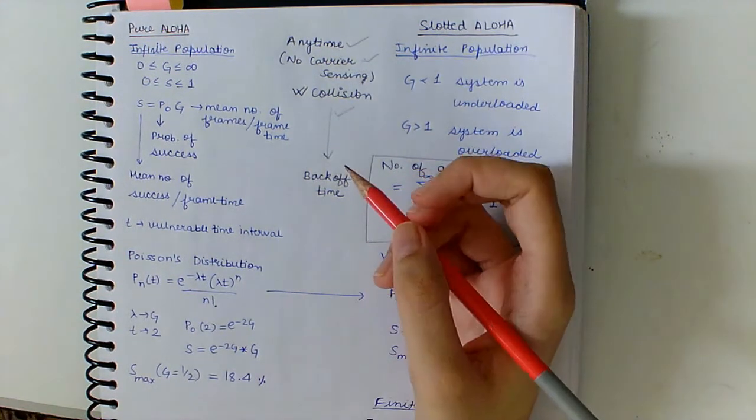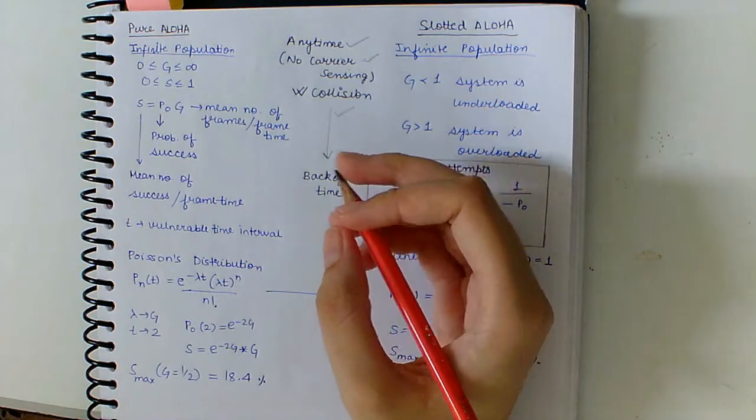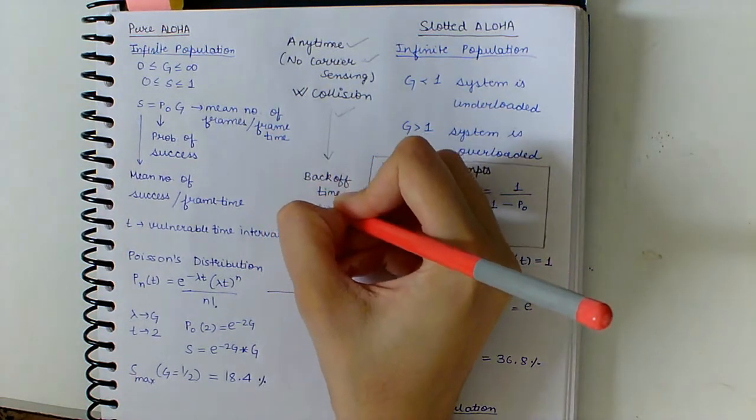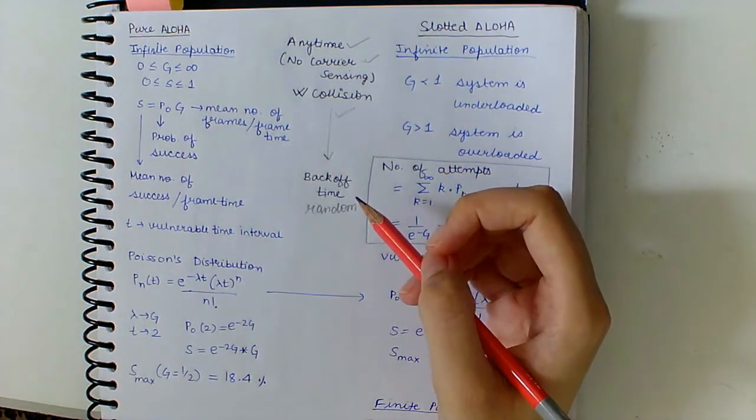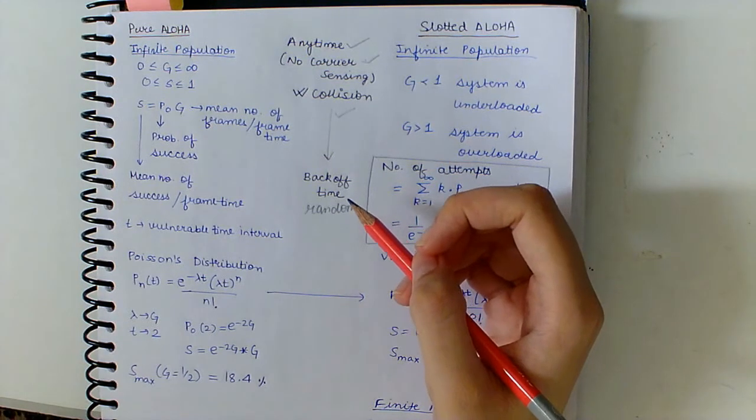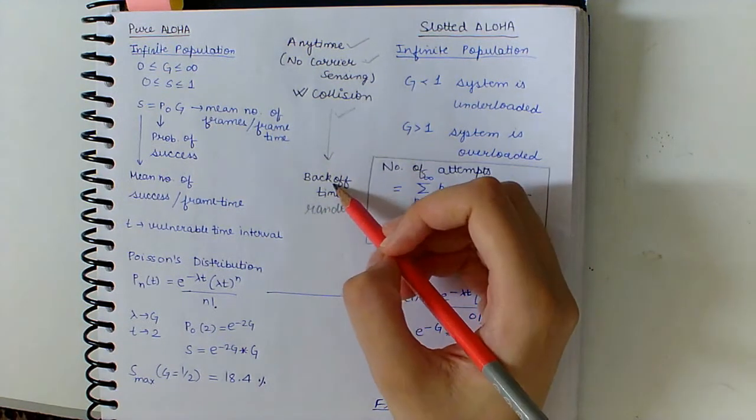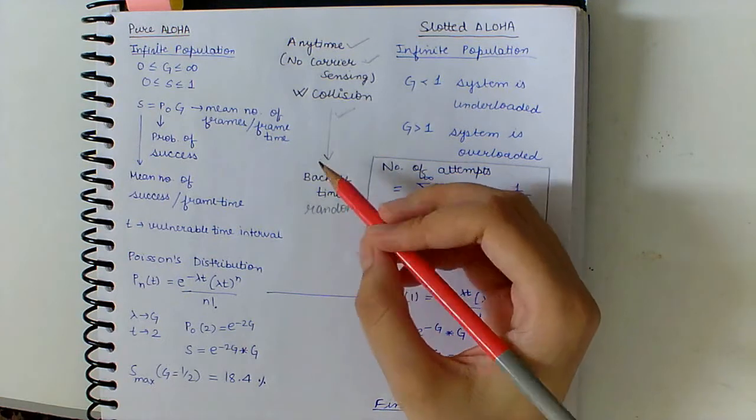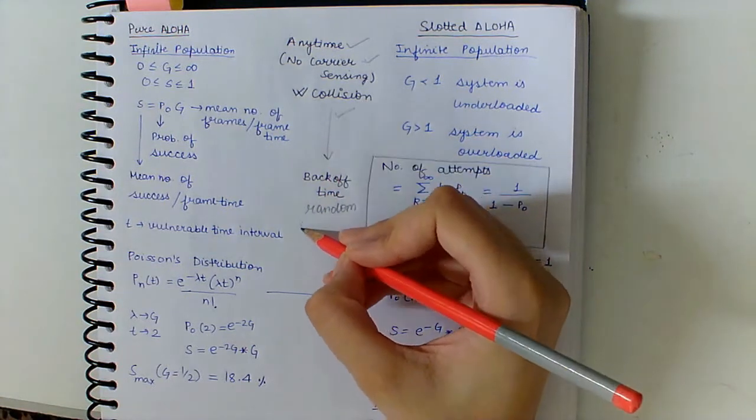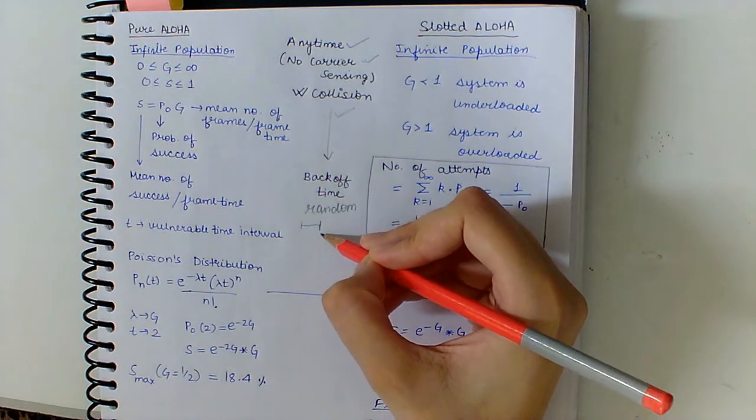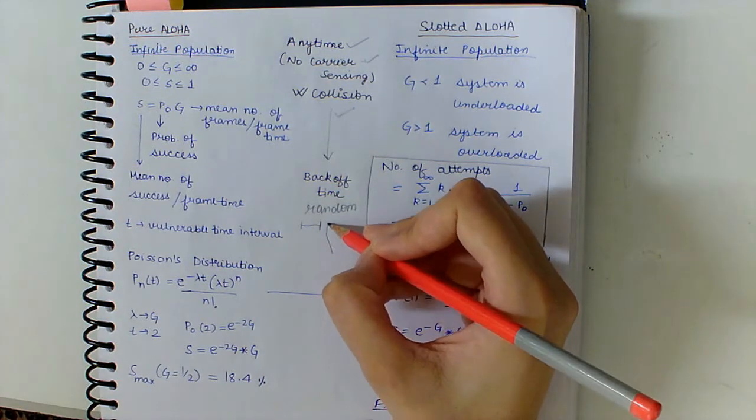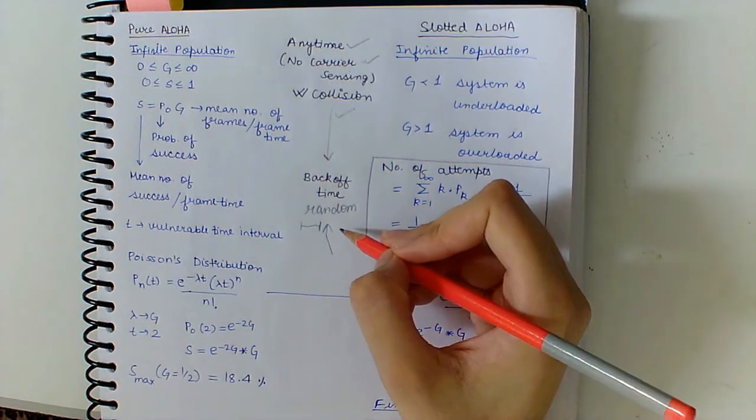A backoff time is given, which is a random time allotted to each sender whenever a collision occurs. It stops trying for that amount of time and then again sends the request to the channel for transferring the frame.